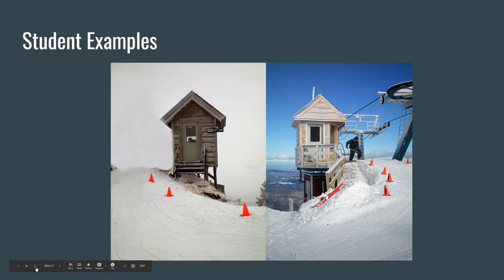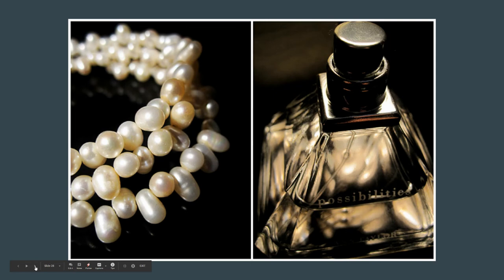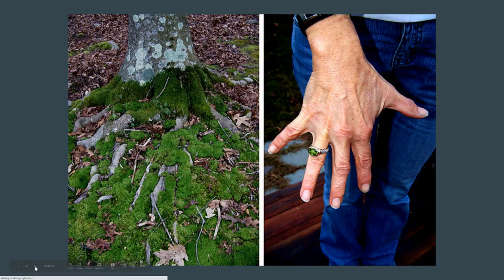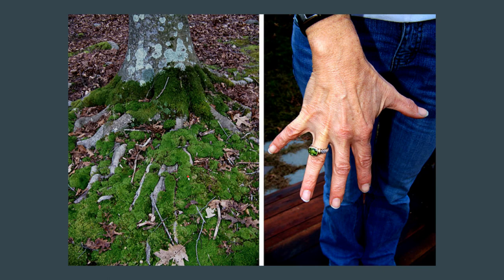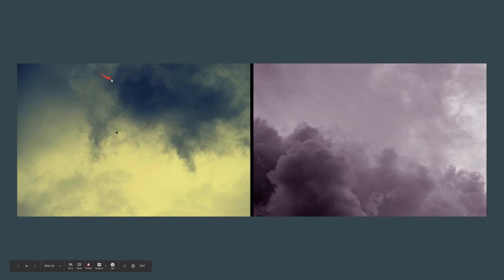These are examples from my former students. I really love how these two have similar things but how the student made them line up right in the middle — great continuation there. On top of that, there's the same composition and even different kinds of weather, which is interesting. These are both images that have to do with luxury and femininity. This one won some awards — the fingers and the roots are very similar to each other, and the green ring really pulls us into the moss and vice versa, helping to unify the two images.